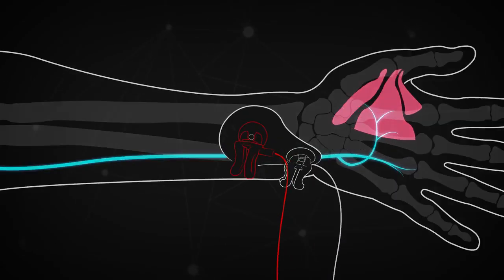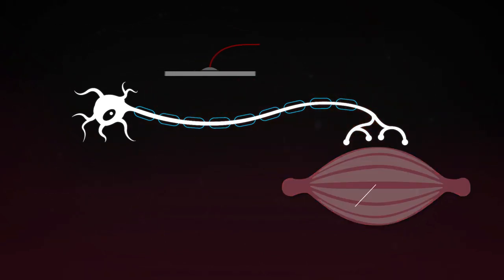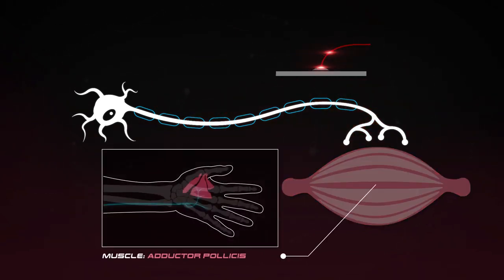Nerve stimulation versus direct muscle stimulation. Correct electrode placement is imperative in order to stimulate the target motor nerve while avoiding any direct stimulation of the target muscle, in this case the adductor pollicis.